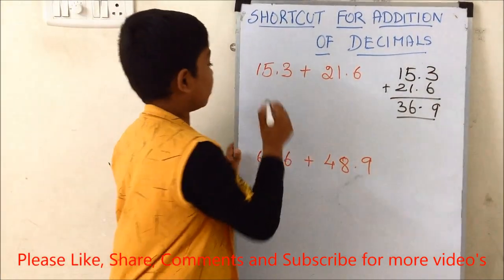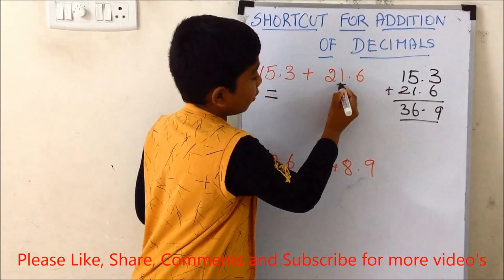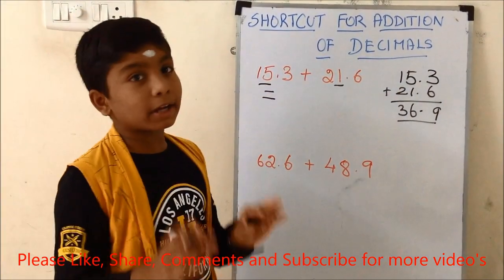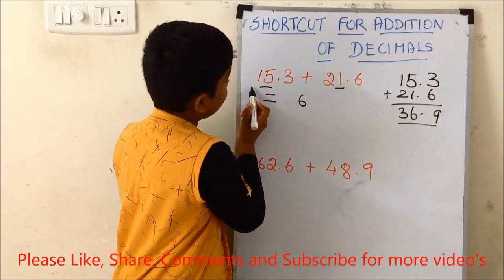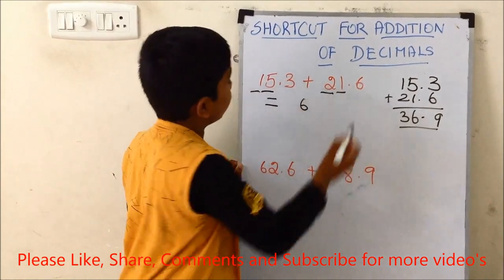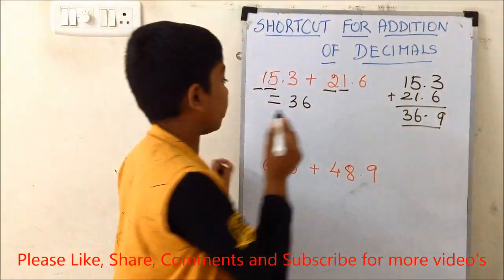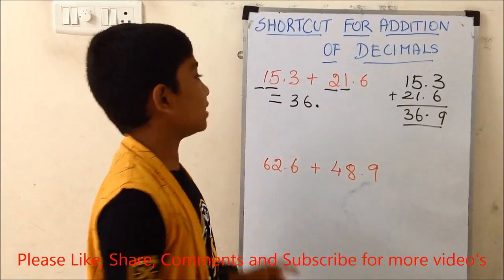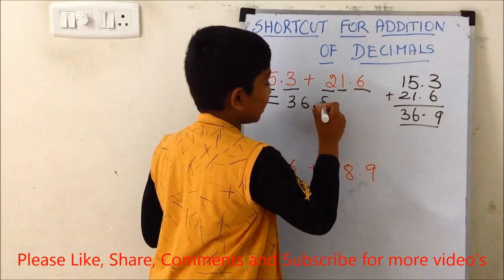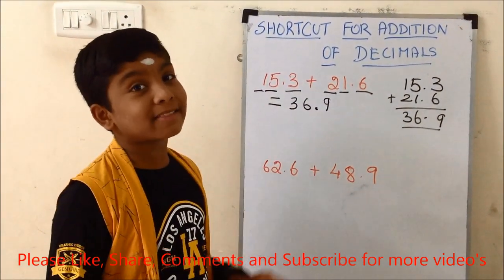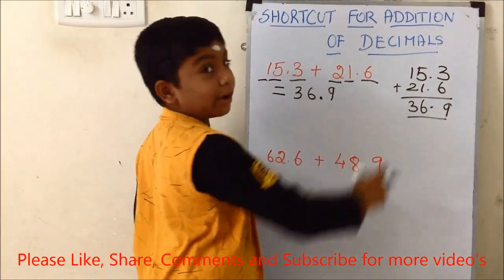The first step is we need to add the ones digit of these two numbers. That is, 1 and 5 — 5 plus 1 is 6. Write 6 here. Next digit: 1 and 2 — 1 plus 2 is 3. Write 3 here and put the decimal point. Then add the tenths digits: 3 and 6 — 3 plus 6 is 9. Write 9 here. Now we have got the answer easily and simply — 36.9. Also remember this with the number 10.